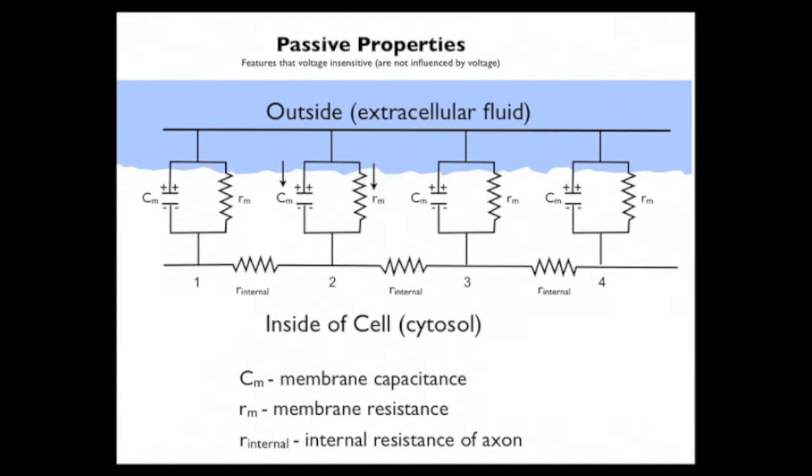The second component is the membrane resistance, which refers to how difficult it is for current to flow through the ion channels in a membrane. That just means how many ion channels are open. I will explain this to you in greater detail in just a few moments.